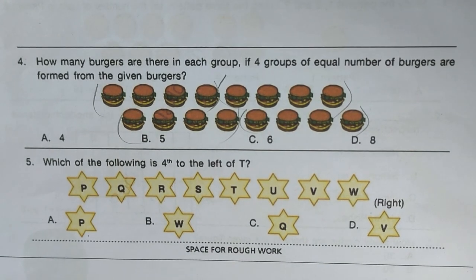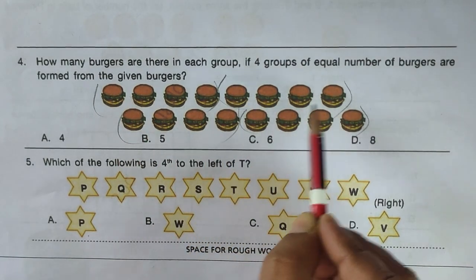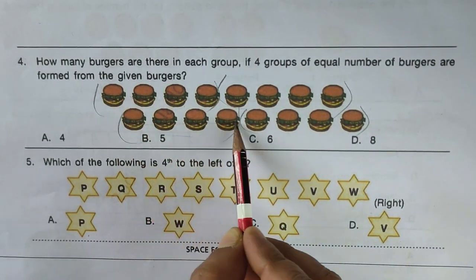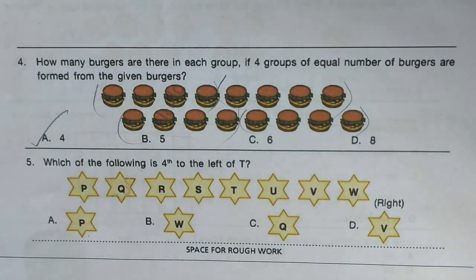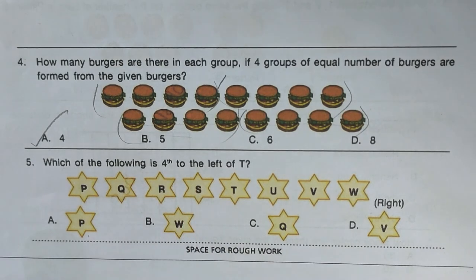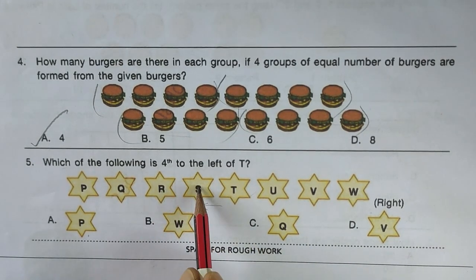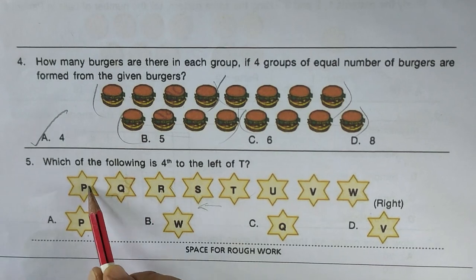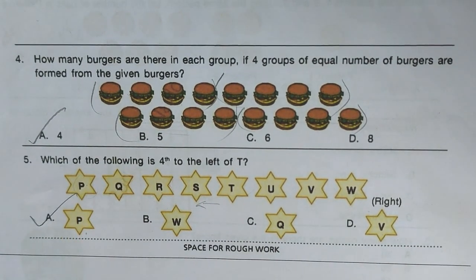Next question: how many burgers are in each group if four equal groups are formed? Four groups are shown. Option A is the right answer. Next: which is four to the left of T? Counting leftward from T: first, second, third, fourth — star P is the fourth one. Option A is the right answer.